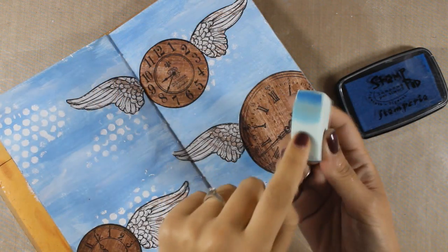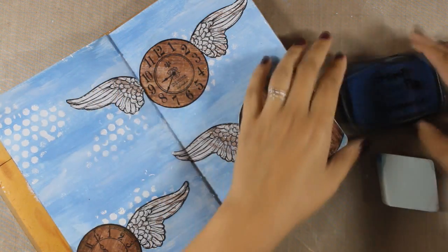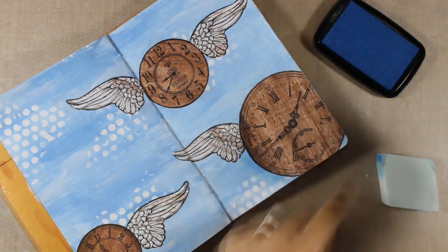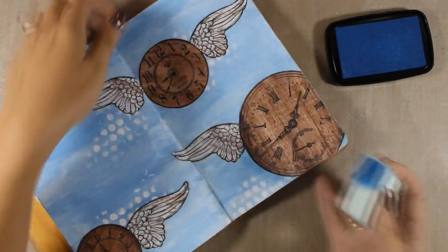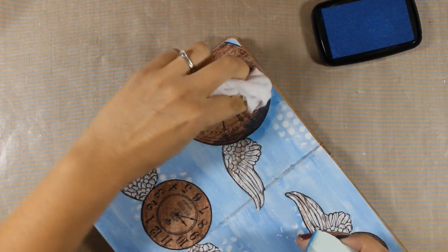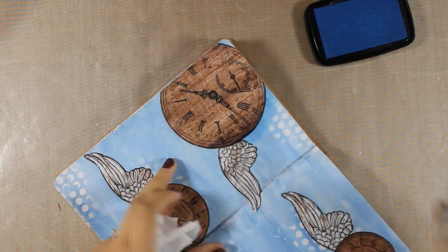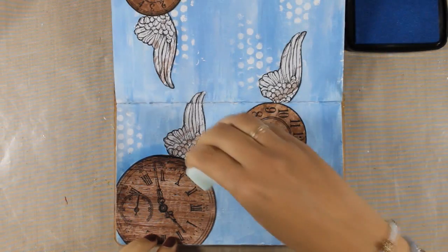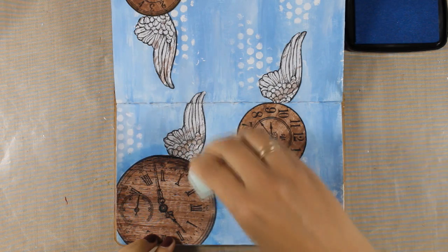Now that everything is nice and dry, I am going to show you how you can create shadows with any ink pad and a sponge. The ink pad that I am using is by Stamperia and it is slightly darker than the blue color that I have for my background. The sponge that I am using is also by Stamperia and it has this diamond shape.